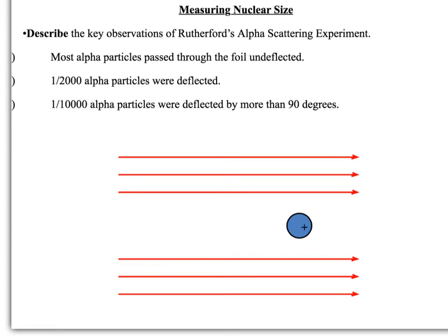Now let's look at the key observations from the experiment. Once they had fired alpha particles and moved the detector all around, totting up the number that arrived at each location, there were three key observations. First: most of the alpha particles passed through the foil completely undeflected — shown by straight lines with no change in direction.